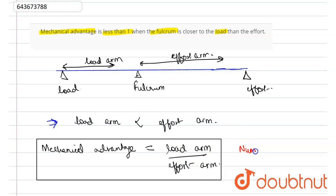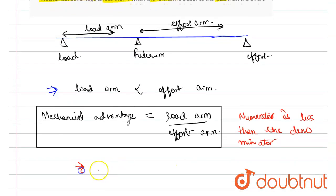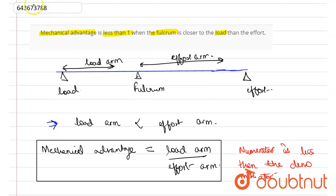The numerator is less than the denominator, and hence it is going to give us a value less than one. And hence, the statement is true. Hope you have understood it well.